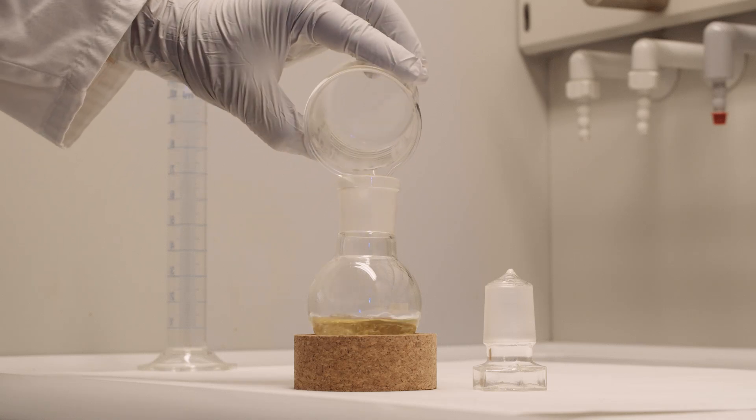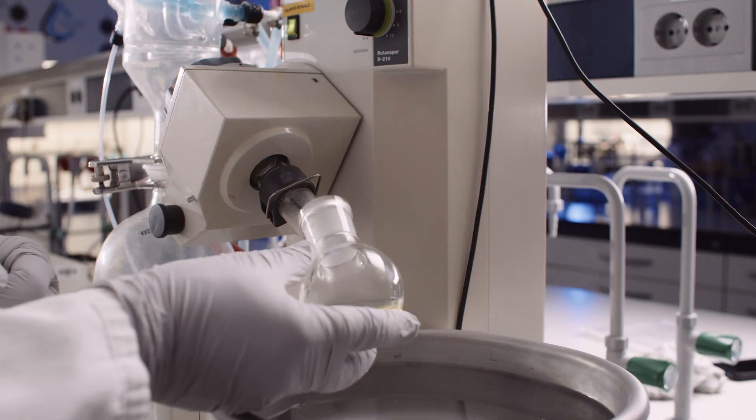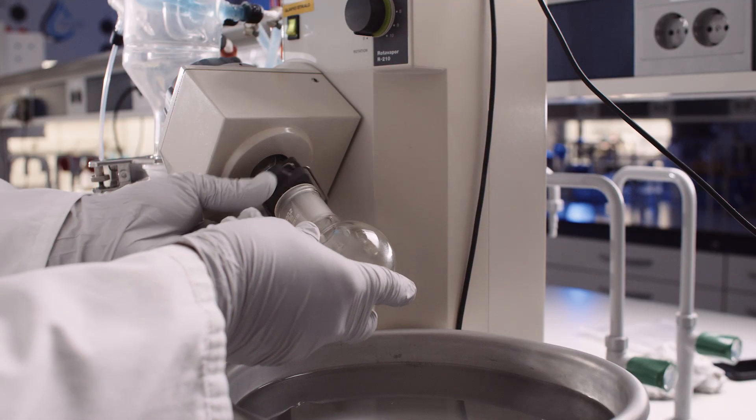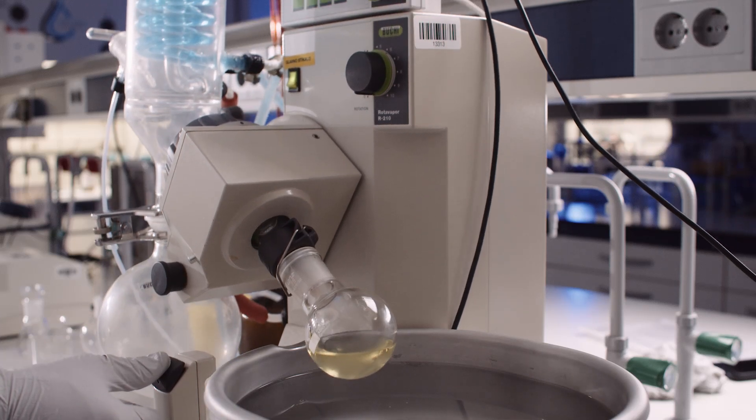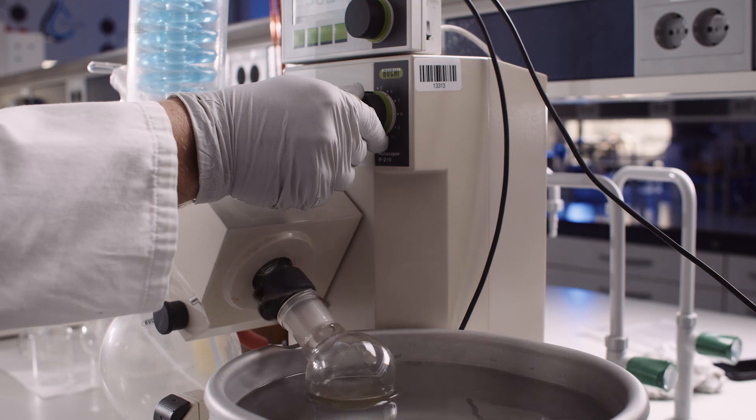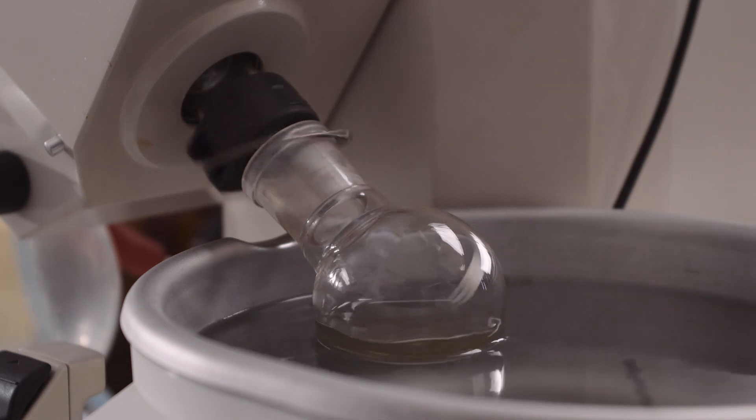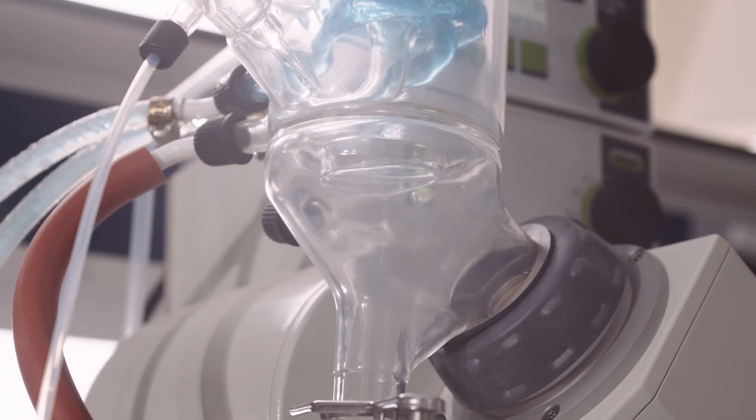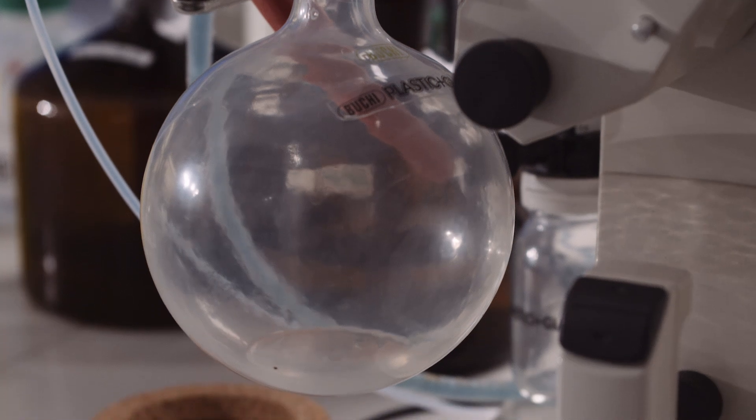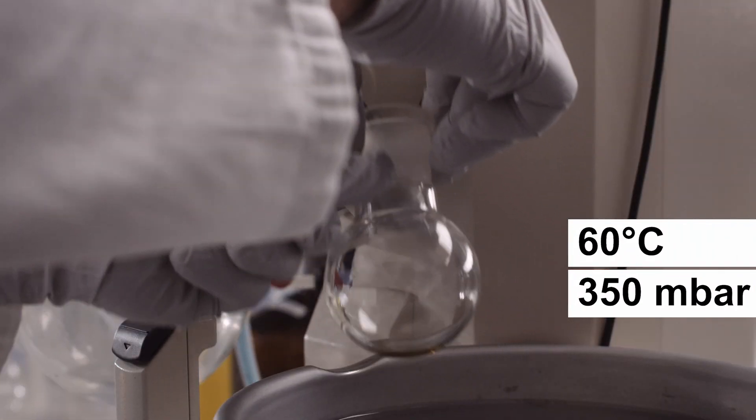When all the mobile phase has passed through the column, place the extract in a ground glass flask and transfer the sample to a rotary evaporator, which evaporates the solvent from the sample using reduced air pressure and elevated temperature. Solvent vapors are condensed using a refrigerator and collected in a separate flask. The procedure allows us to concentrate the sample. The vacuum and temperatures we use depend on the solvent we want to remove. In our case, the conditions are 60 degrees Celsius and 350 millibars.